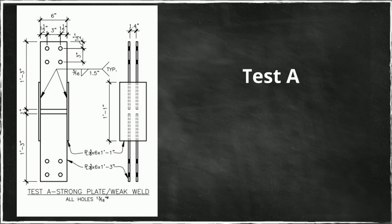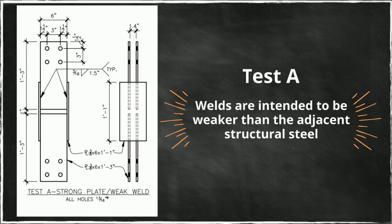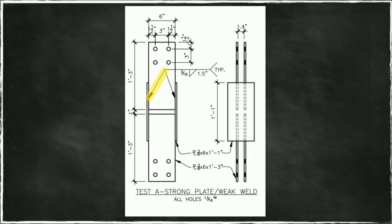For our test that we're calling A, we will design the parts such that the welds are intended to be weaker than the adjacent structural steel. Let's take a look. Welds, welds. These welds are only an inch and a half long. The load path must transfer from the welds through these steel plates and into corresponding welds below.